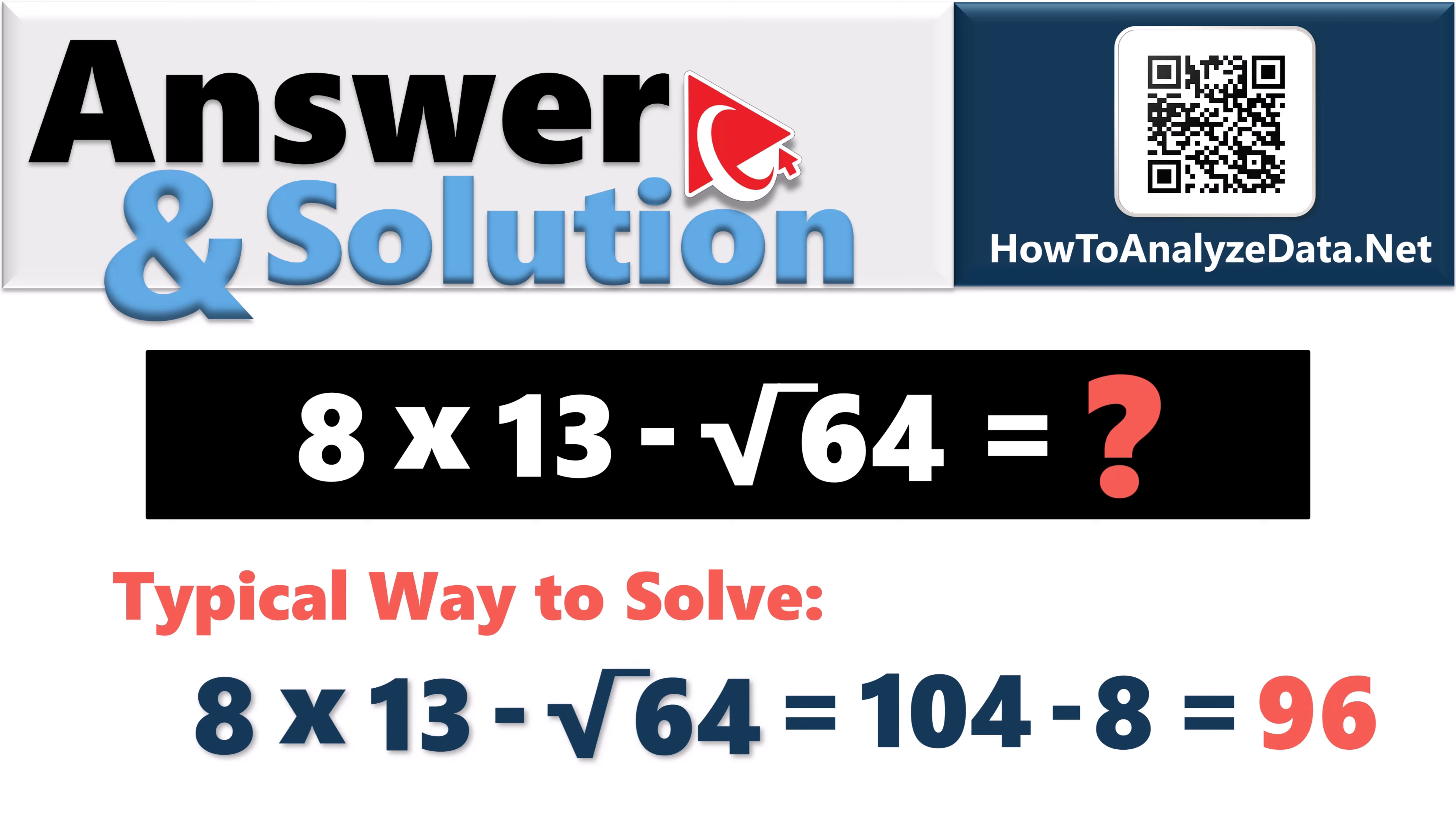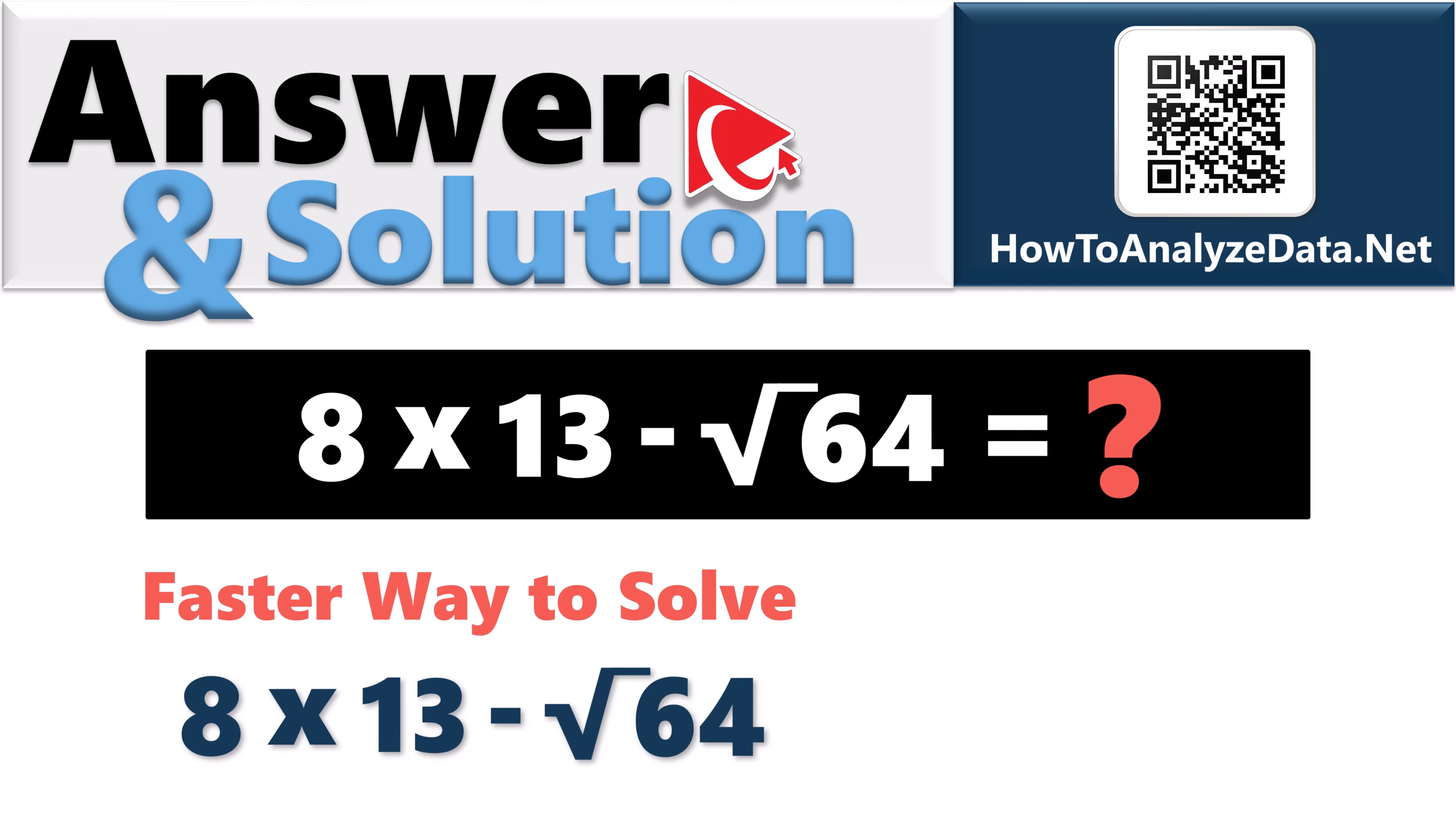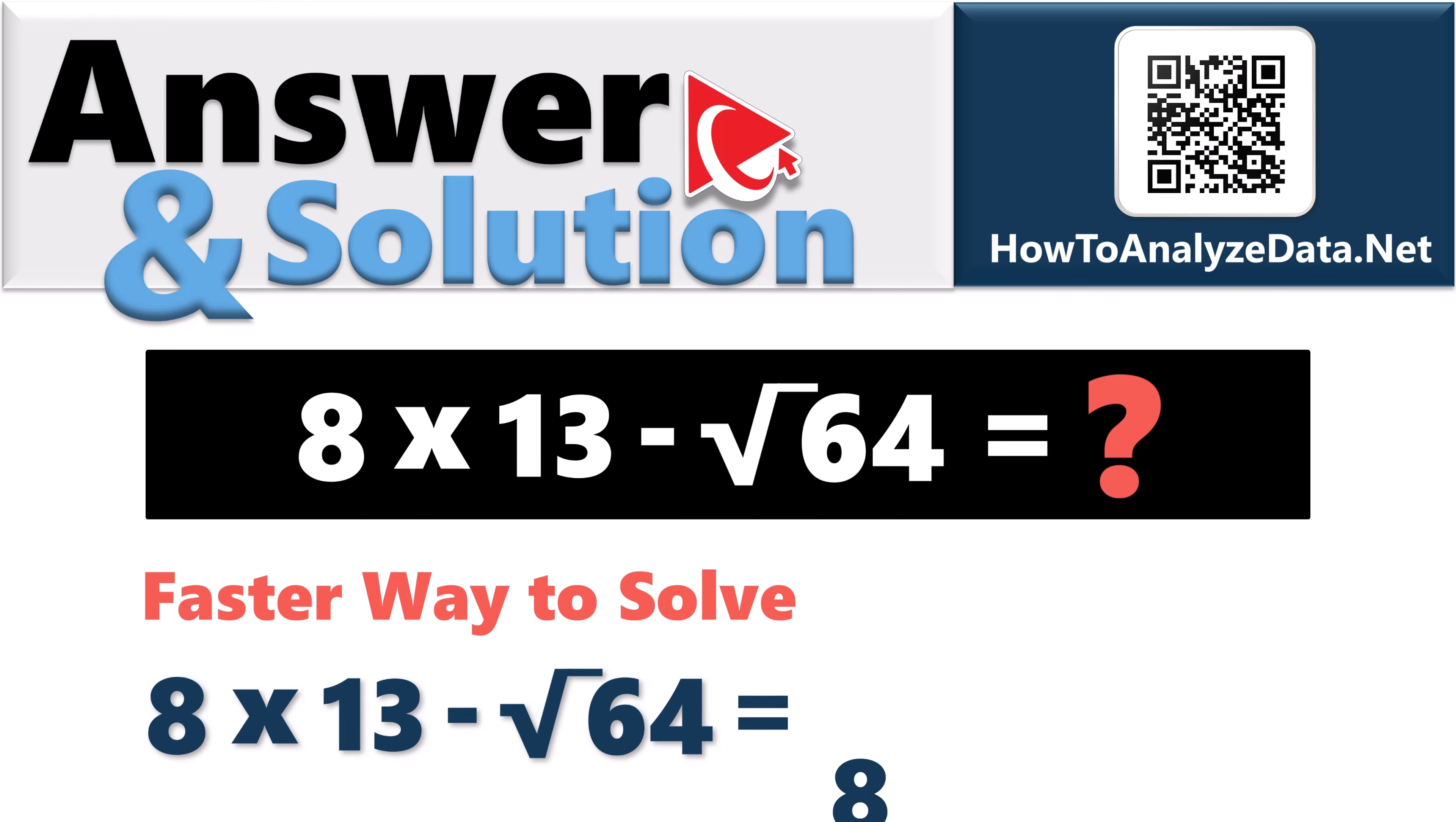But I mentioned to you that there is a faster way to solve it, especially in your mind without the calculator. All you need to do is take a square root of 64, which would be equal to 8, and then you realize that you need to multiply 8 by 12 instead of 13, and the end result of this is 96. So the correct answer here is choice A, 96.